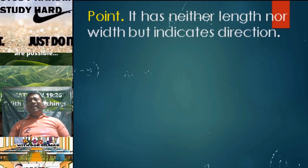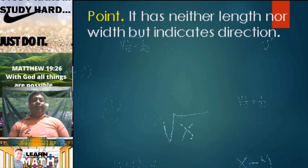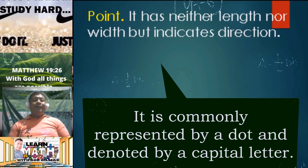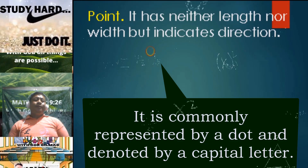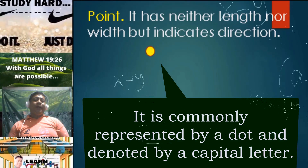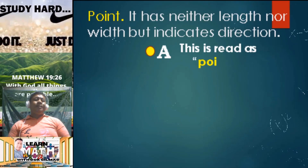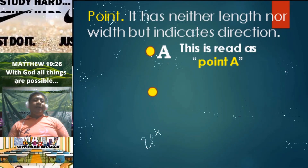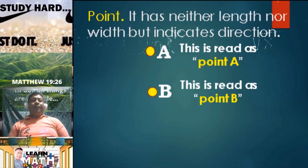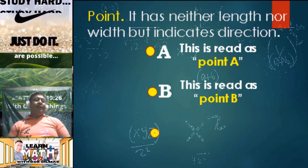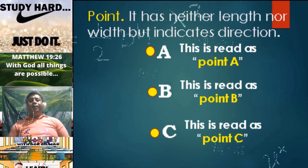Point — it has neither length nor width, but indicates direction. Point is commonly represented by a dot. It is denoted by a capital letter. So as you can see here, we have a dot and a capital letter A. This is simply read as point A. Consider another dot with capital letter B — this is simply read as point B. Another dot here, which is letter C — this is simply read as point C.